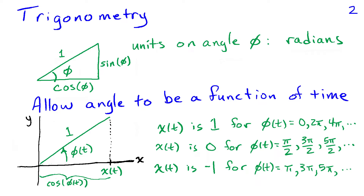Since the hypotenuse has length 1, x(t) is going to be 1 when phi(t) is 0, 2π, 4π, and so on. And x(t) is going to be 0 when phi(t) is π/2 — where the hypotenuse is oriented up the y-axis — or 3π/2, along the negative y-axis, 5π/2, and so on. It's minus 1 when phi(t) equals π, oriented in the negative x direction, and also for 3π, 5π, and so on, because shifting the angle by any multiple of 2π leaves the cosine unchanged.